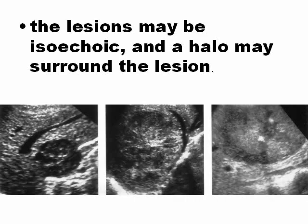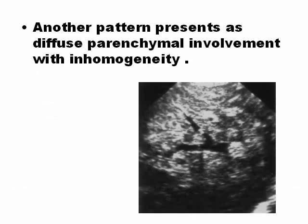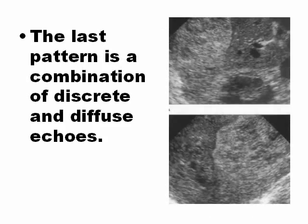Sometimes the tumor can be encapsulated, and sometimes it is totally diffuse inside the parenchyma, making the parenchyma very inhomogeneous. This appearance can be very similar to metastasis from cancer of other organs. The last pattern is a combination of lobar involvement and infiltration.